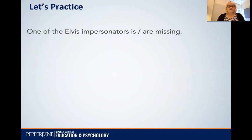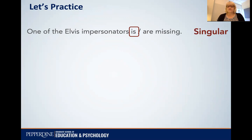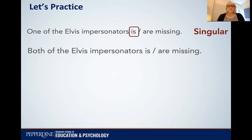Let's practice. 'One of the Elvis impersonators is or are missing?' Here we would choose the singular because of 'one.' 'Both of the Elvis impersonators is or are missing?' Here we would use the plural because of 'both.'